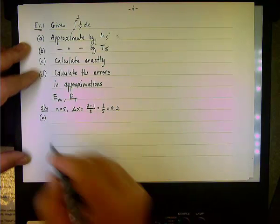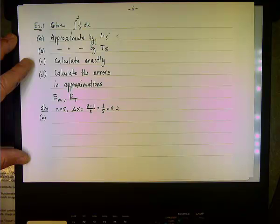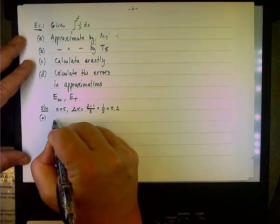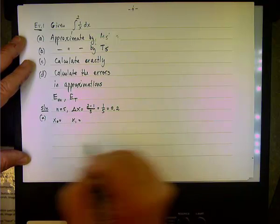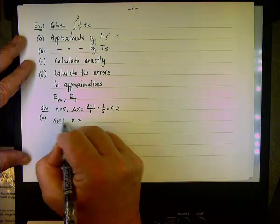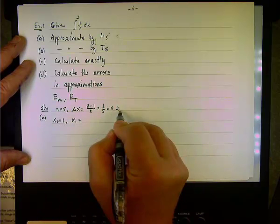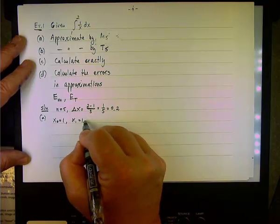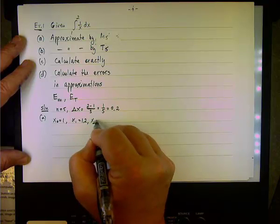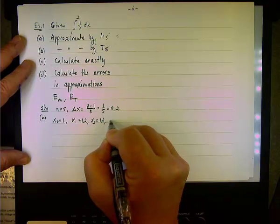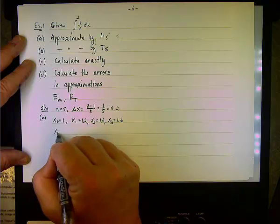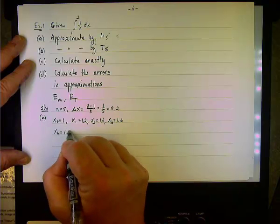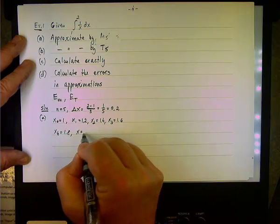Now, for the first technique, remember the midpoint, we need to calculate the midpoint, but also it's good to calculate x sub 0, x sub 1, and all the way to x sub 5. So we start with 1, and then because delta x is 0.2, x sub 1 is 1.2, x sub 2 is 1.4, x sub 3 is 1.6, x sub 4 is 1.8, and x sub 5 is 2.